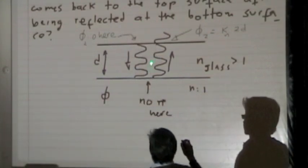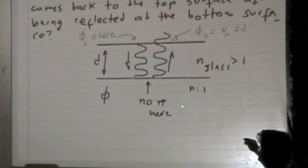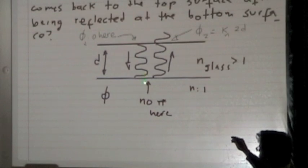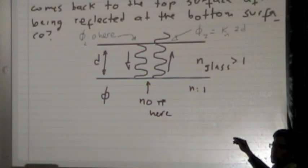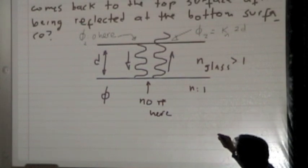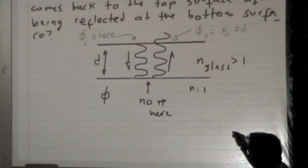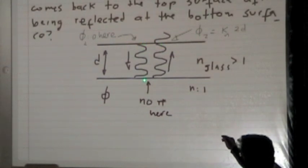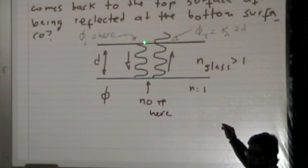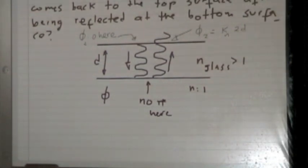Note that the reflection at the bottom surface goes from a high index of refraction to a low index of refraction. That reflection does not give any π phase shift. So there is no phase change of the wave there — it just starts moving in the opposite direction. The phase acquired by wave two is due to having traveled a distance d down and d back up, a total distance of 2d.